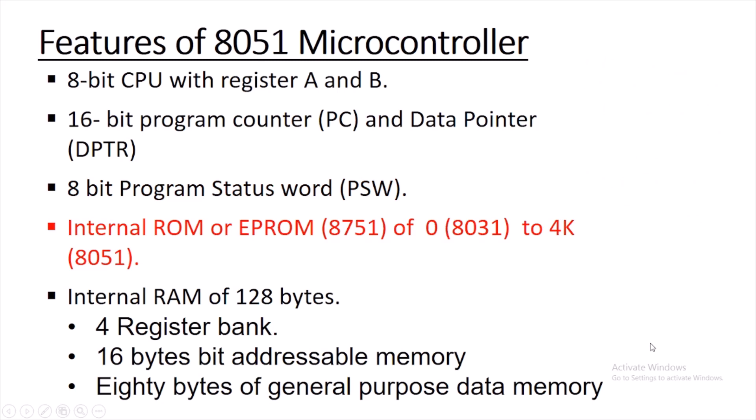8051 is having internal ROM of 4K. The predecessor of 8051, the 8031, was having no on-chip ROM. The successor of 8051 is the 8751 which has EPROM (erasable programmable read only memory). 8051 is having 4K of internal ROM wherein programs are burned and permanently stored according to the application. When designing small embedded systems, 4K ROM is sufficient to store the program which will handle your application.